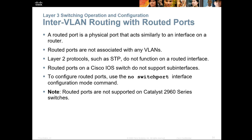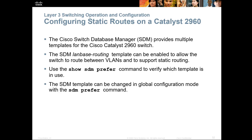The command 'switchport' tells a switch it's on Layer 2, and 'no switchport' turns it back to a Layer 3 or routed port. Routed ports are not normally supported on lower-end switches like the 2960. Cisco has a Switch Database Manager (SDM) which provides multiple templates for 2960s — you could do an SDM LAN-based routing template to enable switches to route between VLANs. View available templates with 'show sdm prefer'.